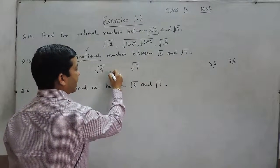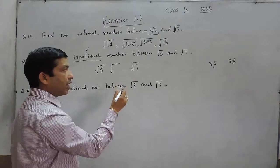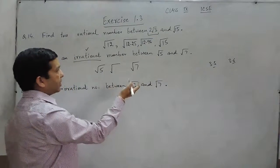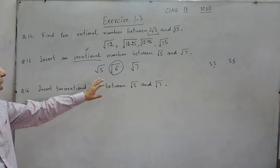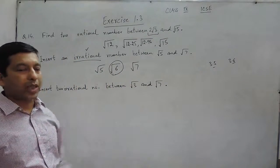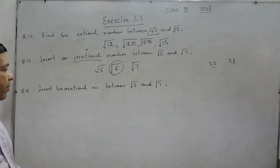In between them, if there is any under root which is not a perfect square, it is definitely irrational. So root 6 can be treated as an irrational number between root 5 and root 7, but there can be infinite numbers between the two.